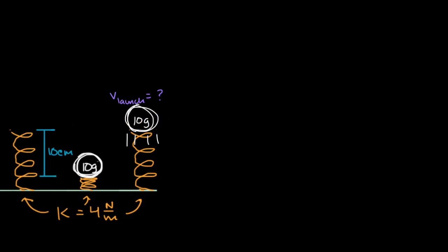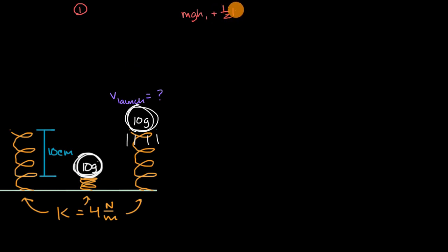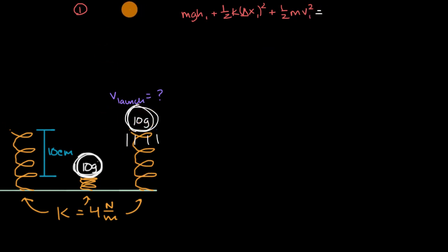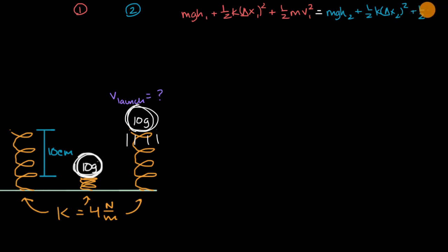Now let's work through this together. Let's call this first scenario state one. The total energy in state one is going to be the sum of gravitational potential energy (mg times height in state one), plus elastic potential energy (one half times the spring constant times how much we've compressed that spring squared), plus kinetic energy (one half times mass times the magnitude of velocity in state one squared). That has to equal the total energy in state two: gravitational potential energy plus elastic potential energy plus kinetic energy in state two.